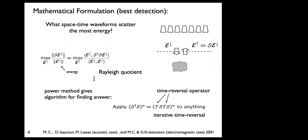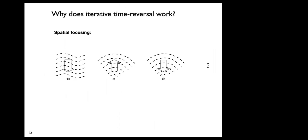It turns out that the adjoint of this operator involves time reversing. You do a scattering experiment: send in a down-going wave, measure the up-going wave, then take that up-going wave and reverse it in time — send out the stuff that came in last, first — and use that as the next waveform. You do another scattering experiment, time reverse again, and keep repeating. This gives you an experimental way of computing the maximum.